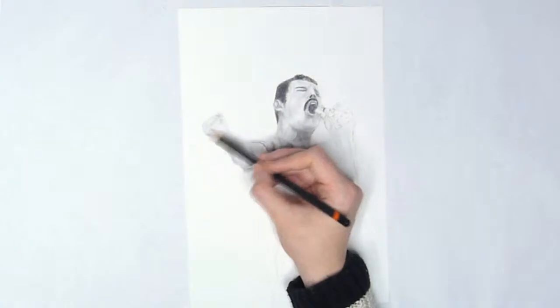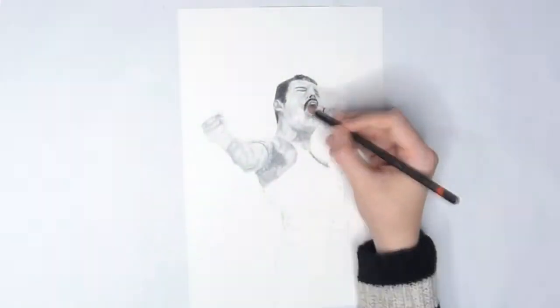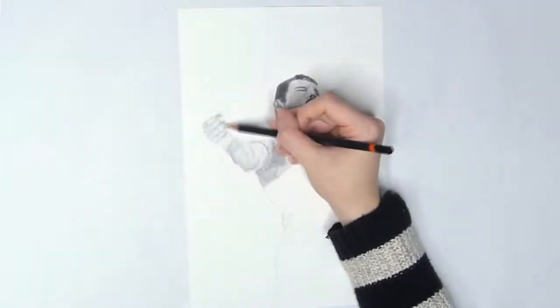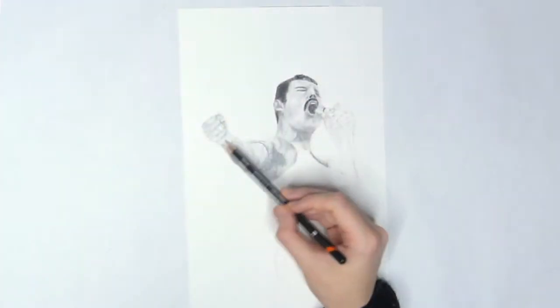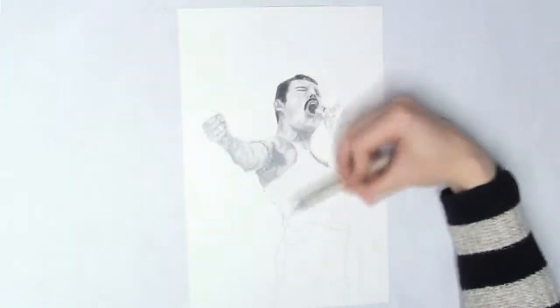So to save you from a ramble about Queen or about the film, I'll start talking about the process of actually making this page now. I started off drawing what would be the focus of the spread and what would take the longest to complete, which is this pencil portrait of Freddie Mercury.